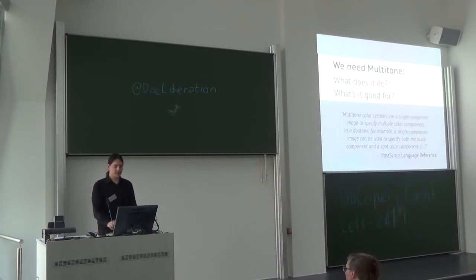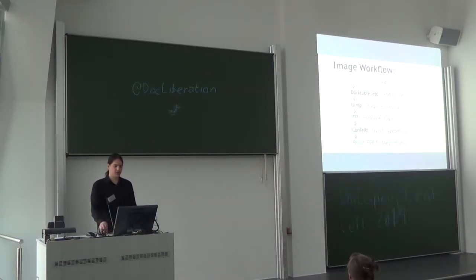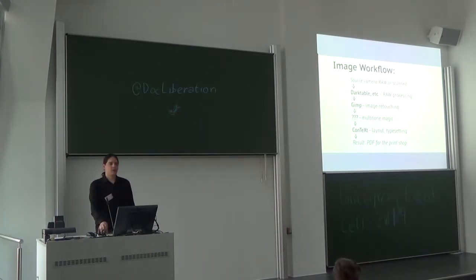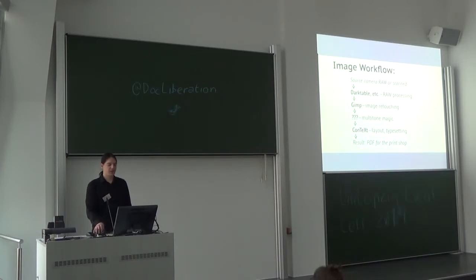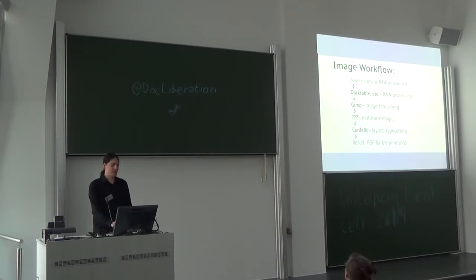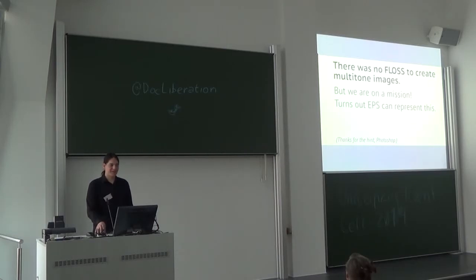We are most probably going to use tritone for our book. The workflow for our images is: they come from camera or scanner, we process them to create black and white images and remove visible flaws, then we create the multitone images and include them in our final document using ConTeXt for layout. But it turned out there was no open source tool to create these multitone images, so we had to create one ourselves.